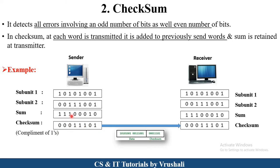All ones are converted to 0 and all zeros are converted to 1. This checksum is then sent to the receiver. The sender sends the previous information, current information, plus the checksum to the receiver. The receiver performs the complement of 1 on the received checksum and checks the addition of the first and current information. If the checksum and sum match, the correct information was received with no error. This is how the checksum method works.